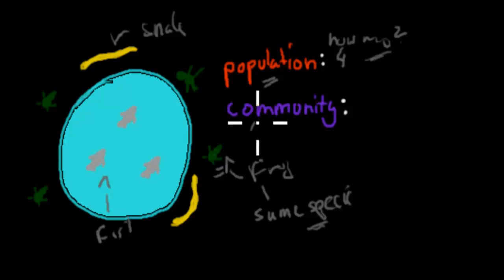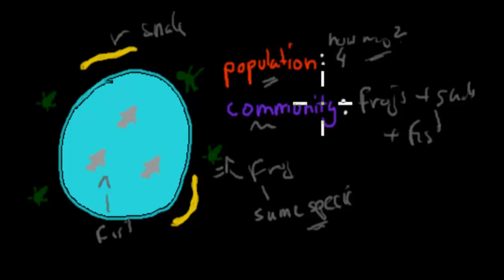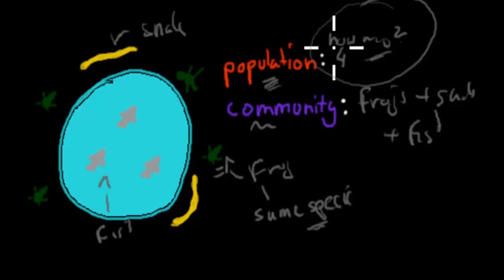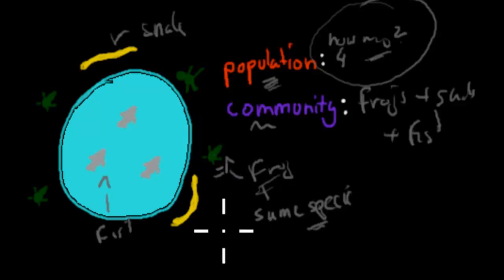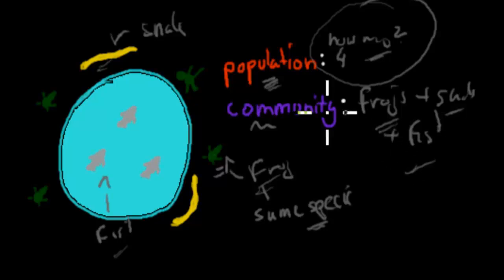What is a community? A community is all the living things you can find in an area. So this community has frogs, snakes, and fish. Population refers to how many of a specific species we can find — four frogs, two snakes, three fish. Community refers to all living things present. Both of these words are quite important, and 'population' appeared in your learning objective.